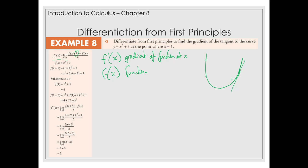So first principles. What happens is, differentiate from first principles to find the gradient of the tangent of the curve y = x² + 3 at the point where x equals 1. Rather than using y equals, we're going to use f(x) = x² + 3.